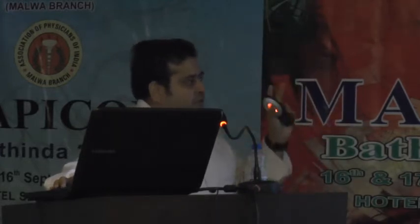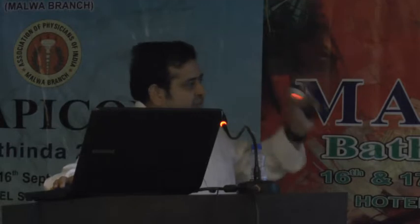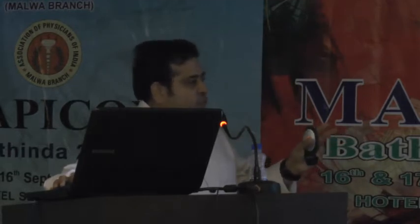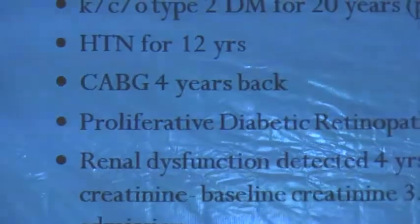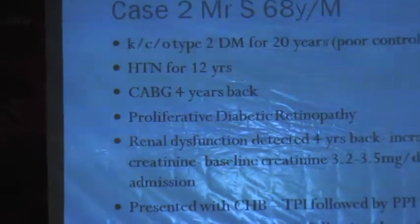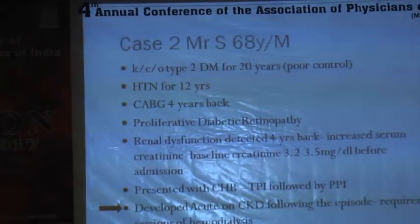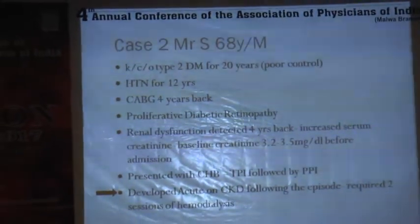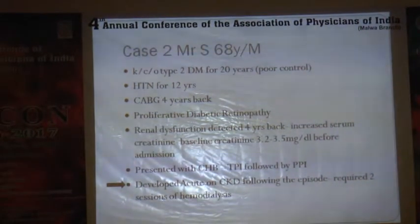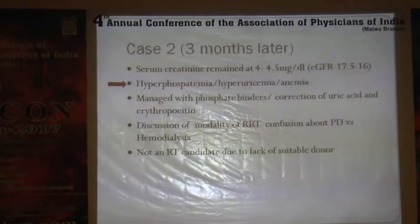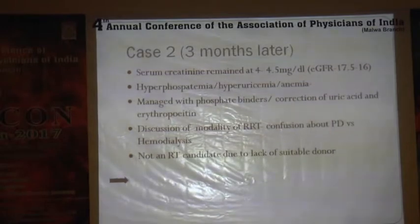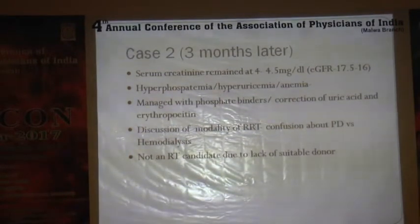The second patient is the classical case — type 2 diabetes with poor control for 20 years. They have all comorbidities by the time they reach end-stage renal disease. An important point: acute kidney injury is not always self-resolving. A large percentage of people with AKI will progress to CKD, and some will go directly to end-stage renal disease. His GFR was rising gradually and he developed all complications of CKD stage 5, leading to obvious confusion about whether to go for PD or HD.